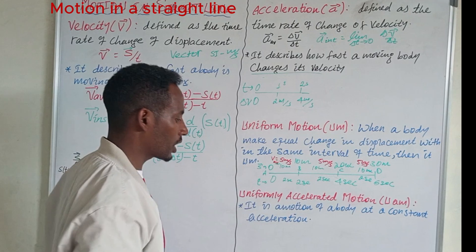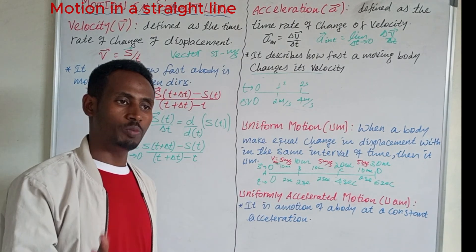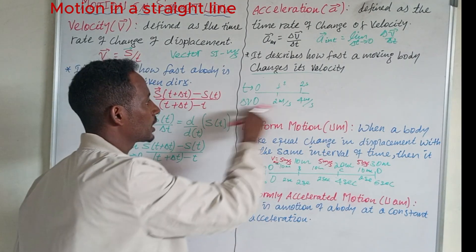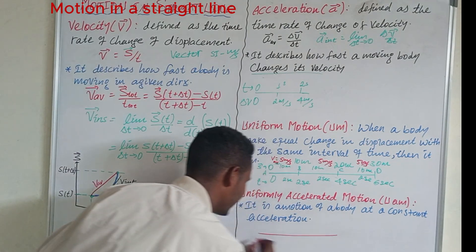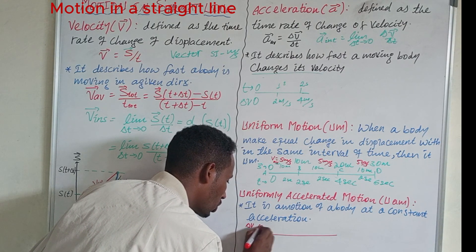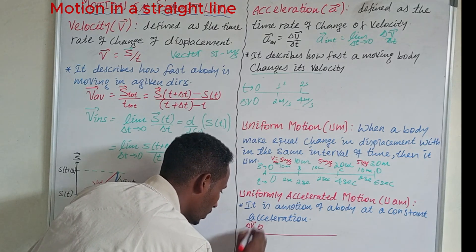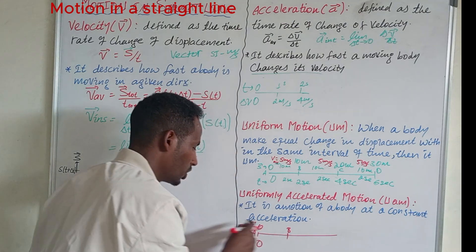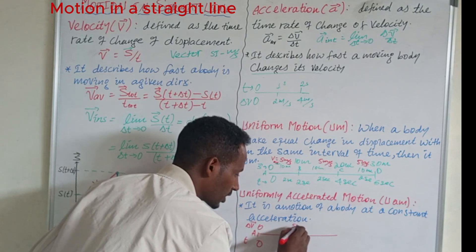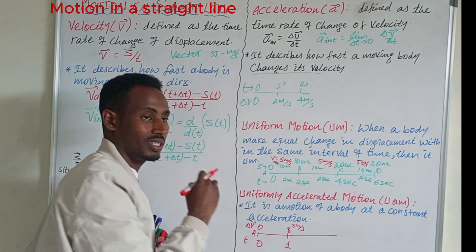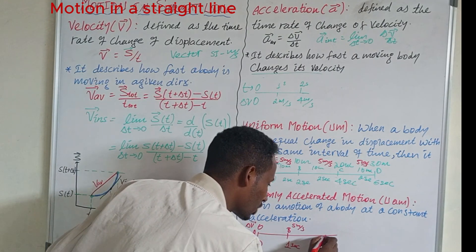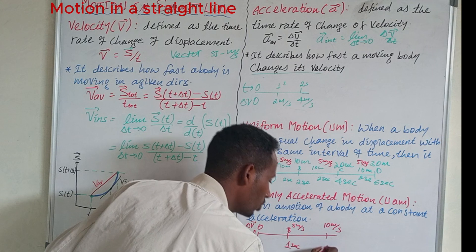In uniformly accelerated motion, the velocity will be changed, but it should be changed constantly. We will have zero speed through a time change. In the middle of the curve, the speed of the moving object is going to be five meters per second, about zero meters per second. The limit is 0.3 seconds, and these increases of 9 meters per second happen over the next time interval.